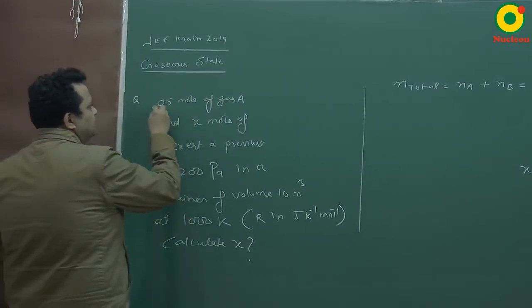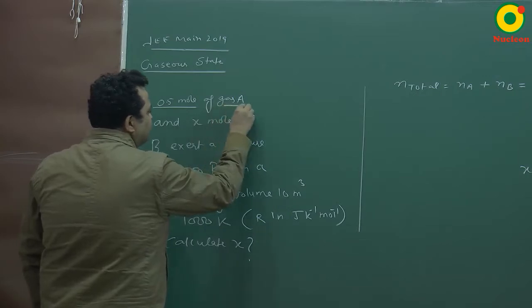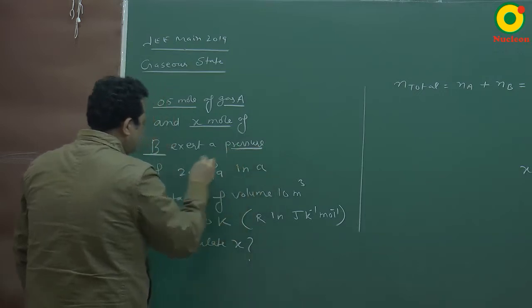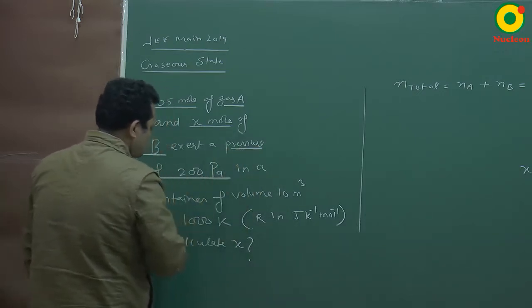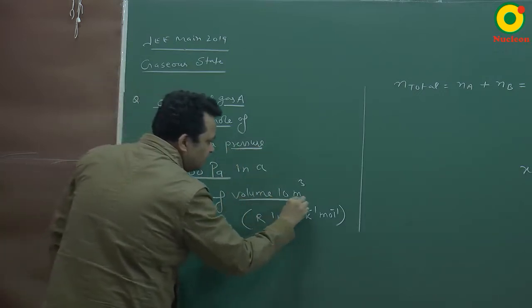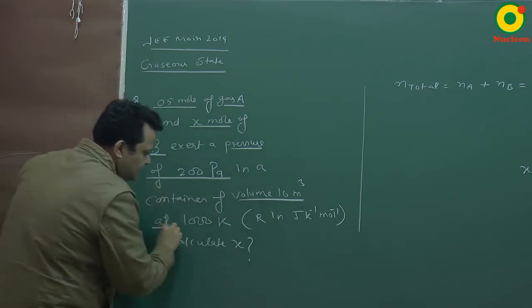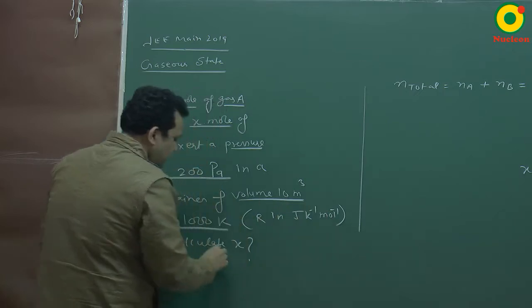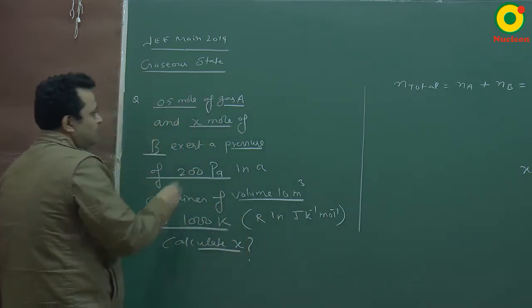0.5 moles of gas A and x moles of gas B exert a pressure of 200 Pascal in a container of volume 10 meter cube at thousand Kelvin. R is in Joule per Kelvin per mole. Calculate x.